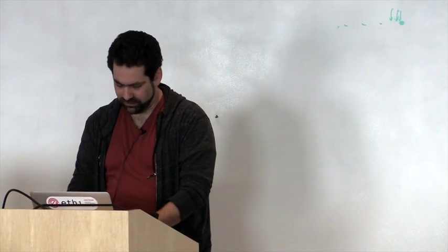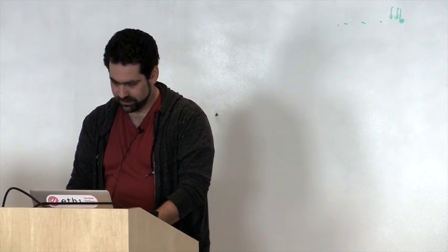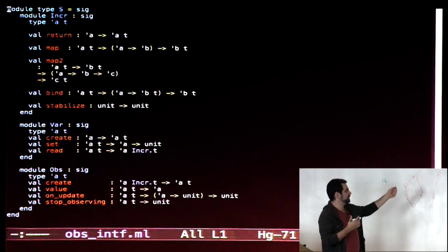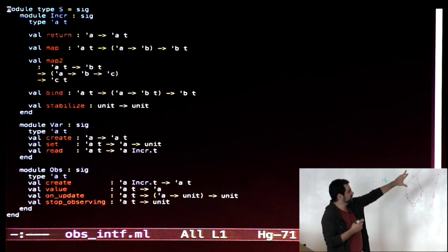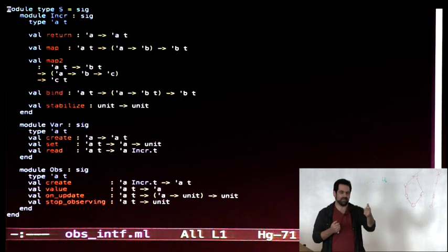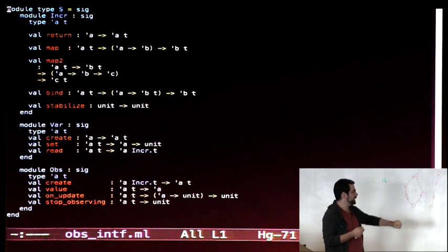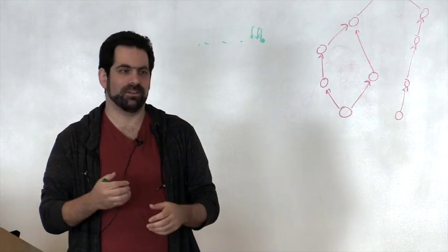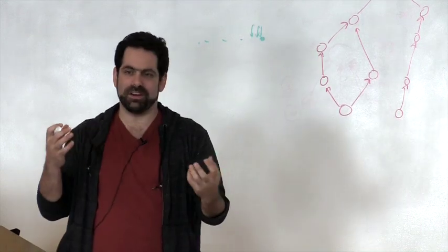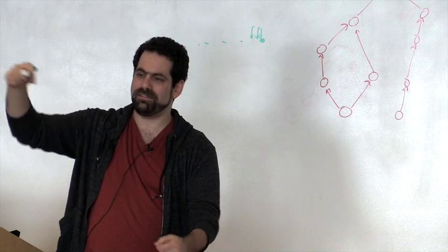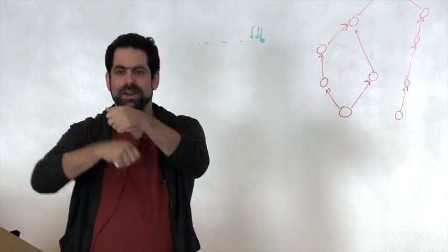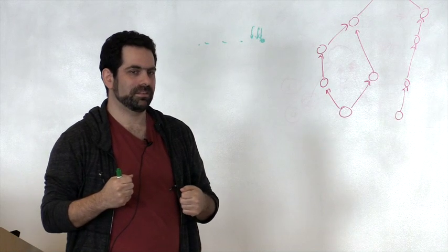Now there are three different components of the interface instead of two. There's the incremental, which is like before except we've removed the part that lets you observe values directly from it. There's the variables, which are exactly the same. And now there's a new thing called an observer, which you can create from an incremental, extract values from, register onUpdate functions for, and importantly, stop observing. They're the dual of the variable — they keep track of opposite parts of the graph. The variable is something you create from nothing and convert to an incremental; the observer is something you create from an incremental and peel information out of.